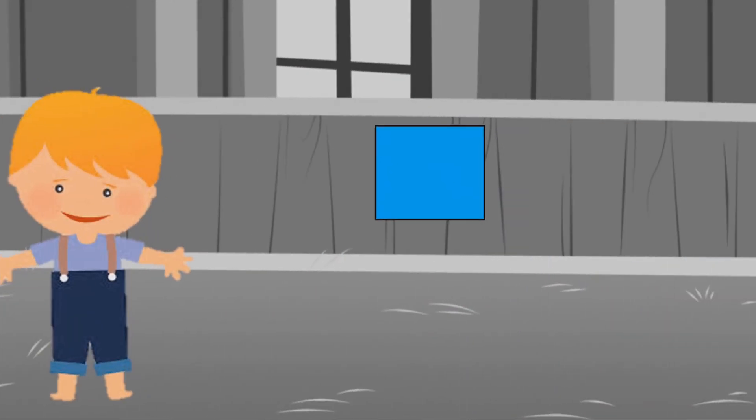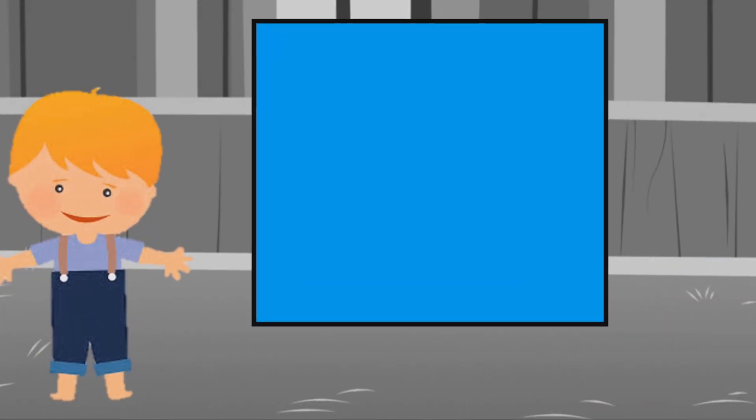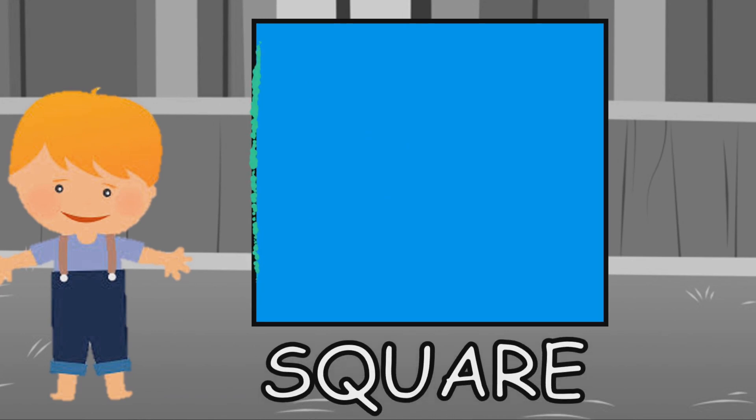A square is a shape with four equal sides. One, two, three, four. Can you say it again? Square.